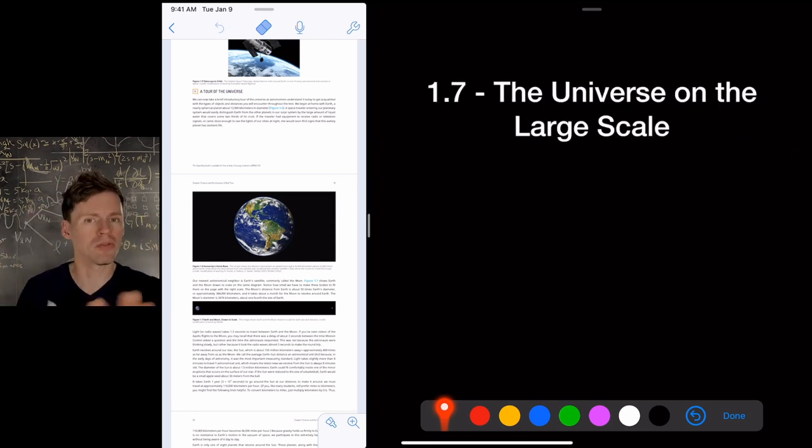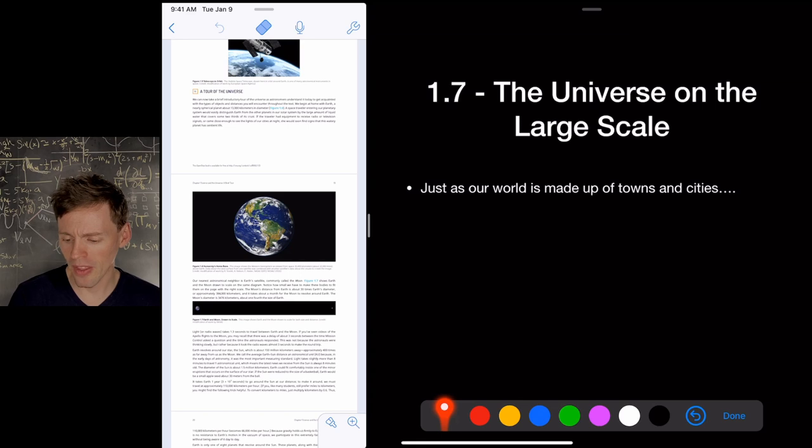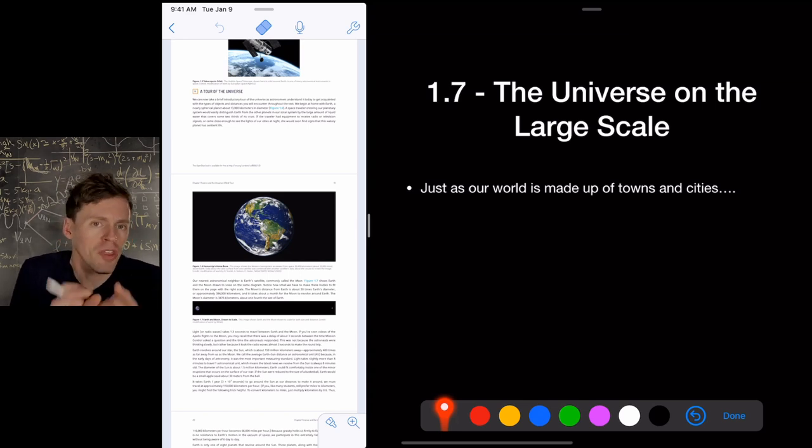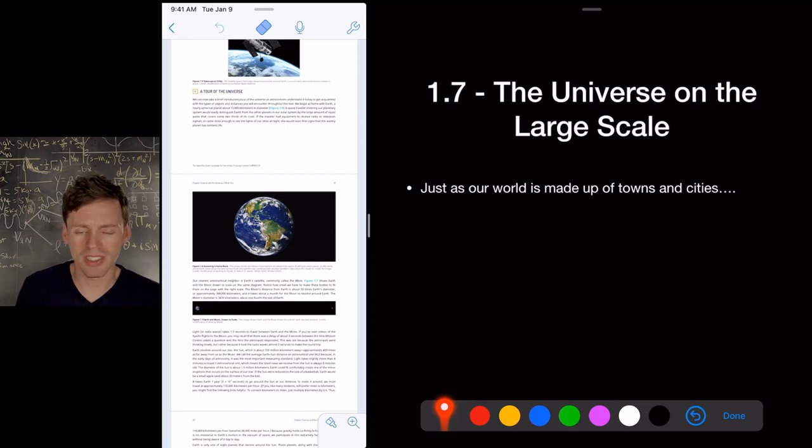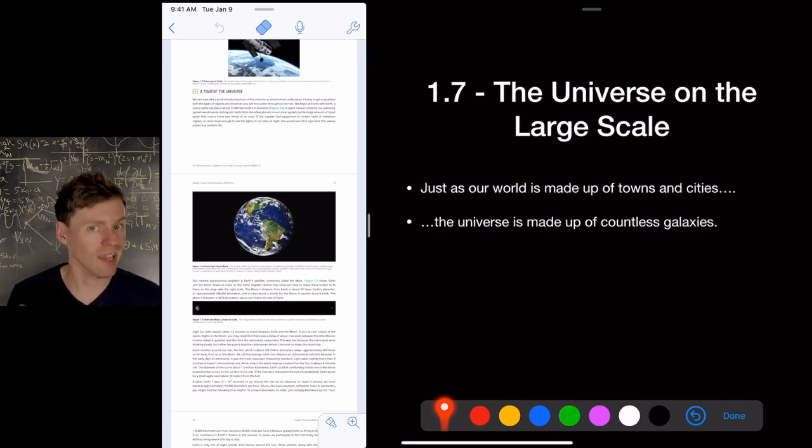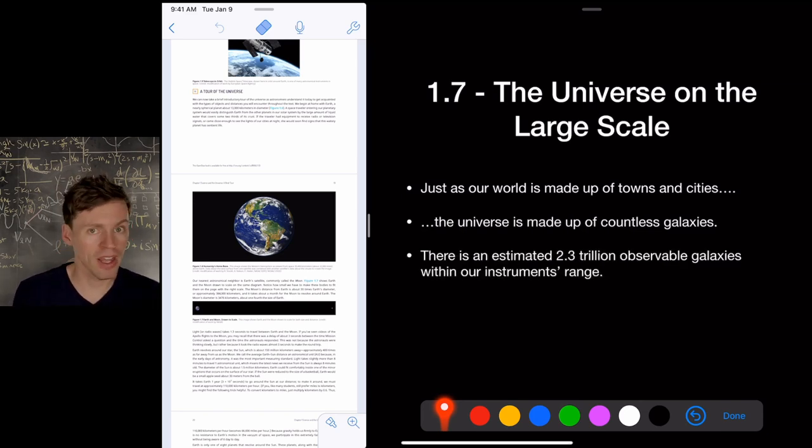So if we zoom out to really contextualize this a little bit, the planet Earth, we've got a lot of cities going on, different towns, different sizes, small cities, big cities, little cities, towns, little farms. The universe is made up of countless galaxies in the same way. Small galaxies, big galaxies, planets that have no host star. They're just floating around, all sizes. Estimated more than two trillion galaxies within our instruments range of ability to see within our observable universe.